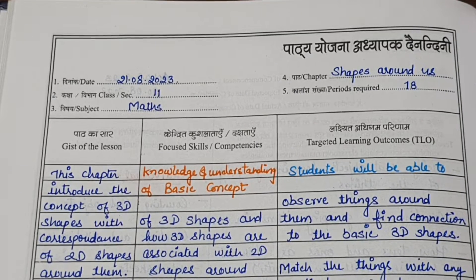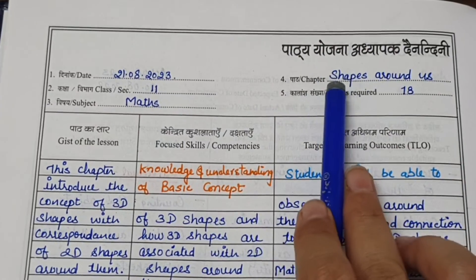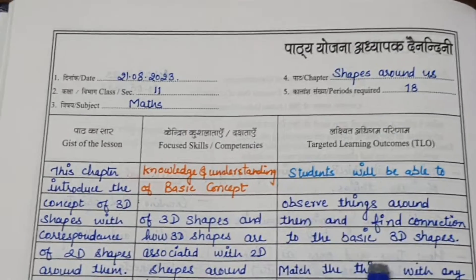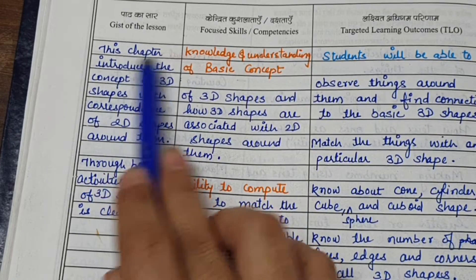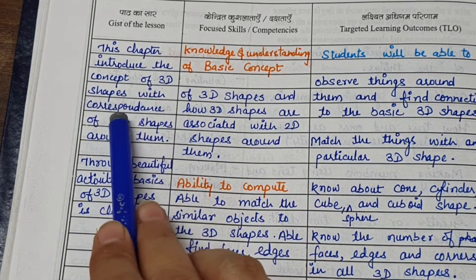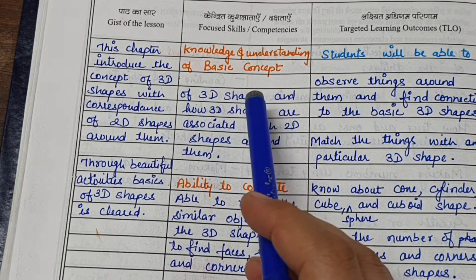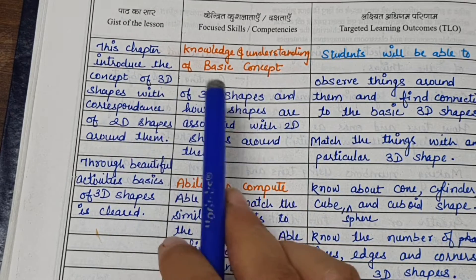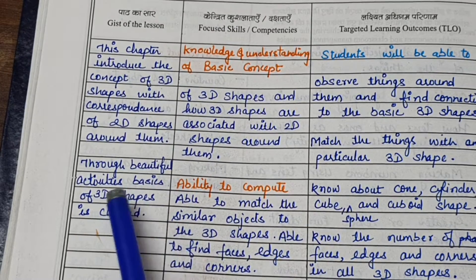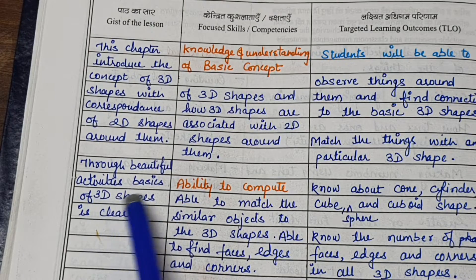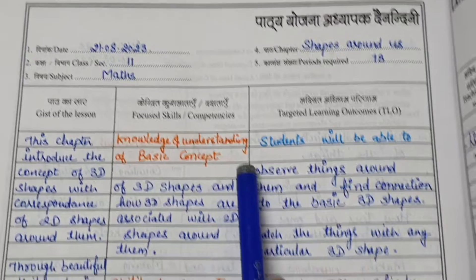Hello dear teachers, welcome to my channel. Let's talk about the lesson plan for class 2 maths, chapter 'Shapes Around Us'. The gist of this lesson is that this chapter introduces the concept of 3D shapes with correspondence to 2D shapes around them. Children from class 1 already know 2D shapes, so we'll teach them 3D shapes using 2D shapes through beautiful activities, and the basics of 3D shapes will be cleared.